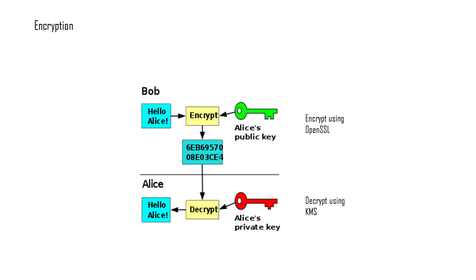This is the main important aspect of encryption using your asymmetric key. In our demo, we'll first use KMS to generate a public and private key. Then we'll use a tool called OpenSSL along with the public key to encrypt a message. That message will then be decrypted using KMS, since only KMS has access to the private key.